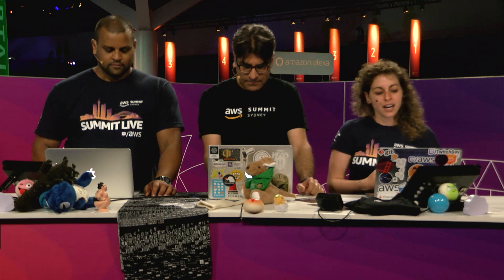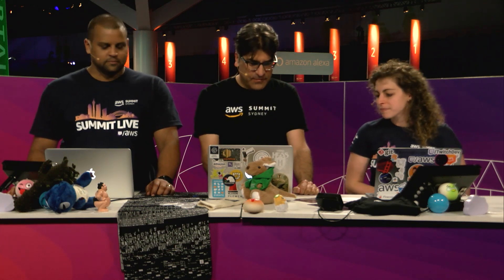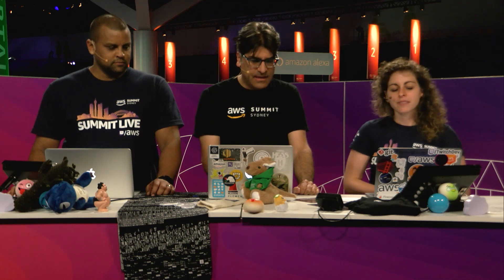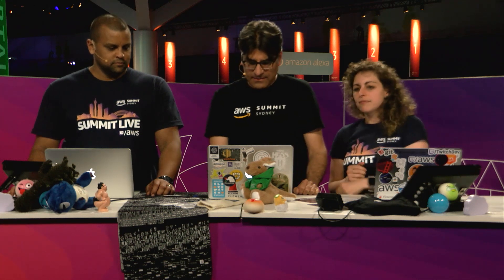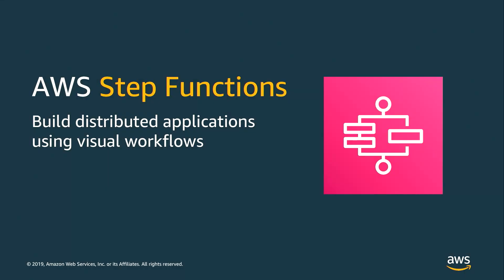So tell me a little bit about AWS Step Functions. For those that are not familiar with it, what is it? Step Functions is a workflow service from AWS. It's really designed — we talk about it as building distributed applications as visual workflows. Other people talk about this as orchestration, coordination. But it's really a way of connecting services that are on a network and keeping them in a coherent fashion.